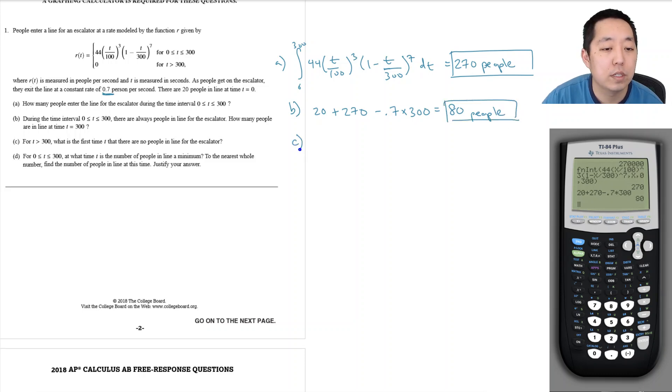Part C: For t greater than 300, what is the first time t that there are no people in line for the escalator?